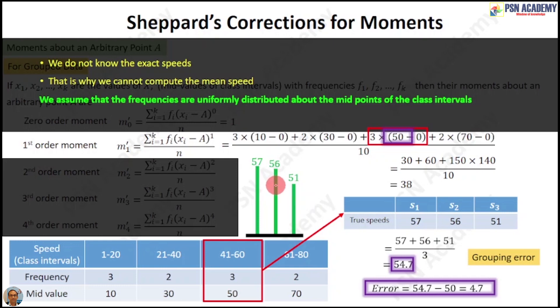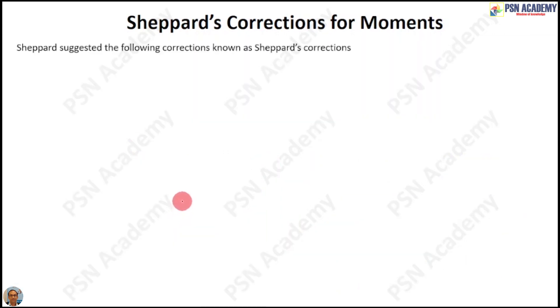But when you have highly skewed distributions, or your class interval exceeds the 1/20th of the range - that means you have more than 20 class intervals in the given range - then you will have a considerable error. Sheppard has suggested some corrections for the moments with errors.